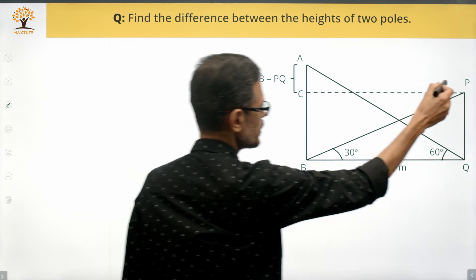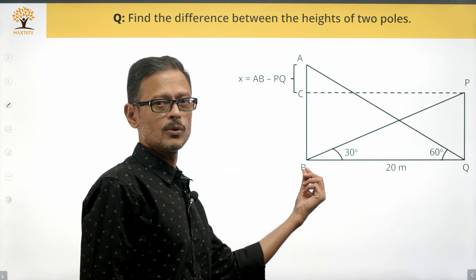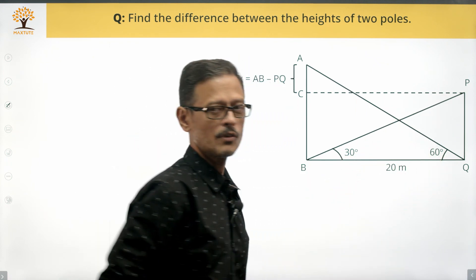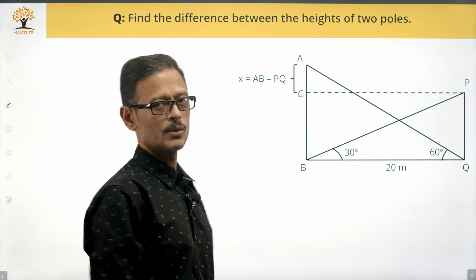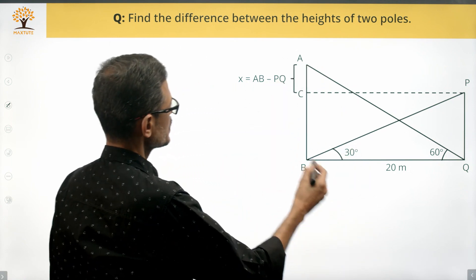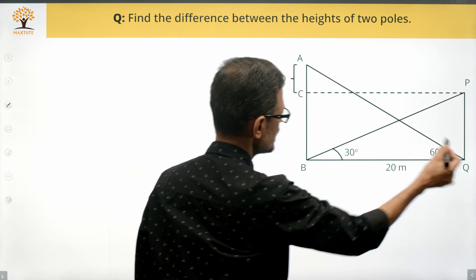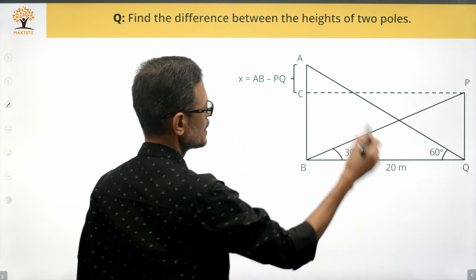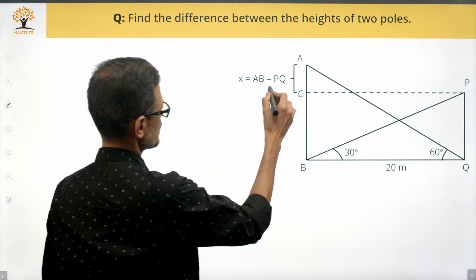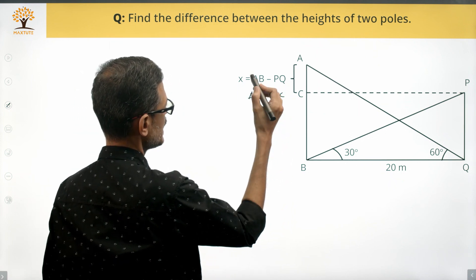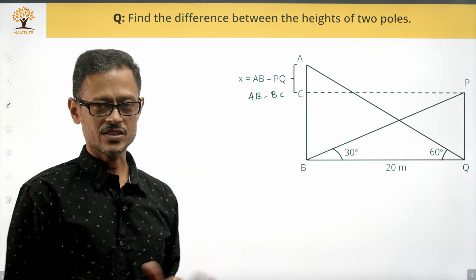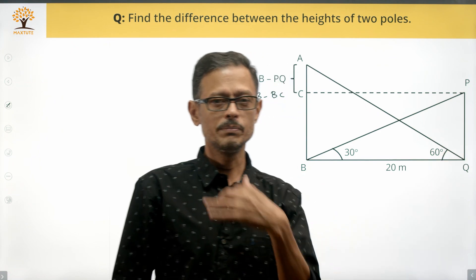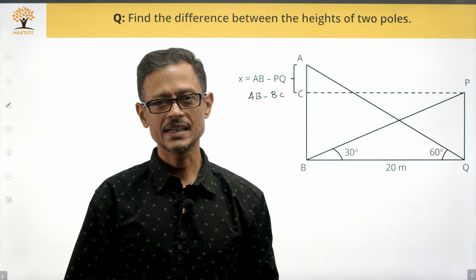AB is the taller pole and PQ is the shorter pole. From the bottom of the taller pole to the top of the shorter pole, the angle of elevation is 30 degrees, and from the foot of the shorter pole to the top of the taller pole, the angle of elevation is 60 degrees. The height of the taller pole is AB, the height of the shorter pole is PQ, and the difference in heights is AB minus PQ. Note that PQ and BC are one and the same, so we are finding AB minus BC.